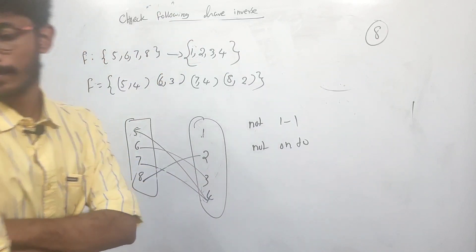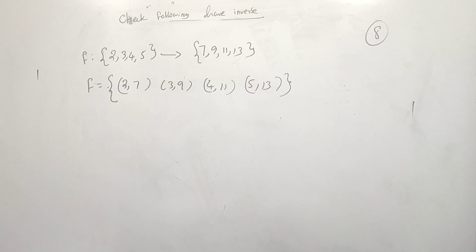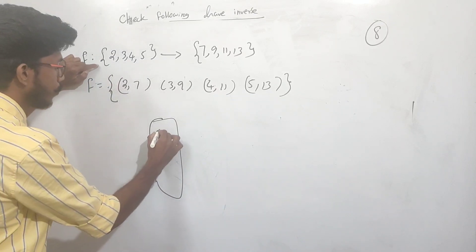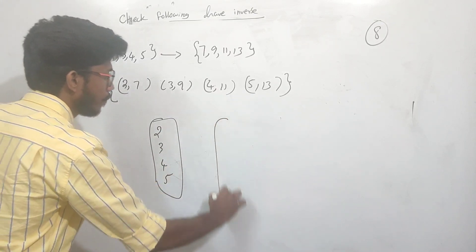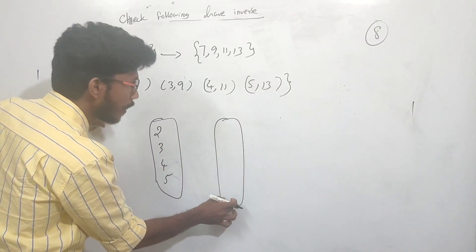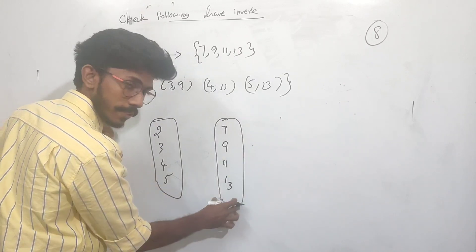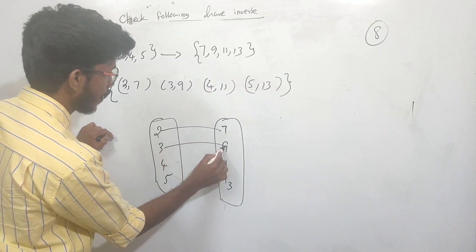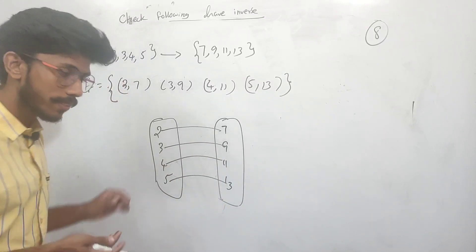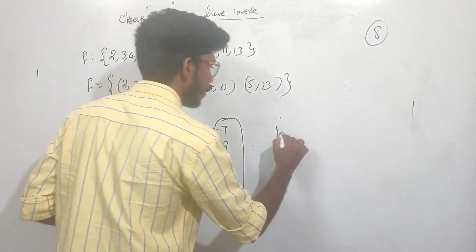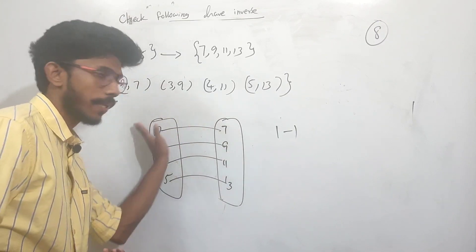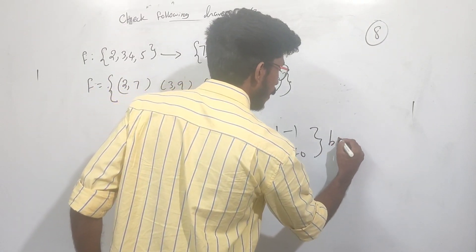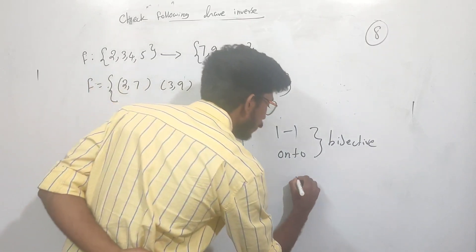Let's see another example. The domain is 1, 2, 3, 4, 5 and the range is 7, 9, 11, 13. Mapping: 2→7, 3→9, 4→11, 5→13. Every element has a unique image, so it is one-one. The function is bijective and the inverse exists.